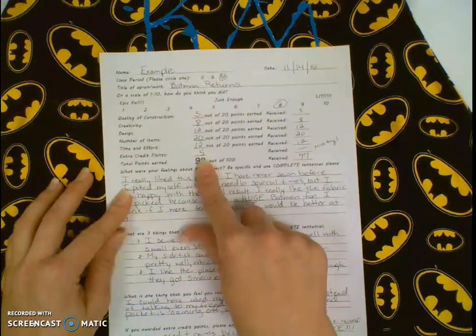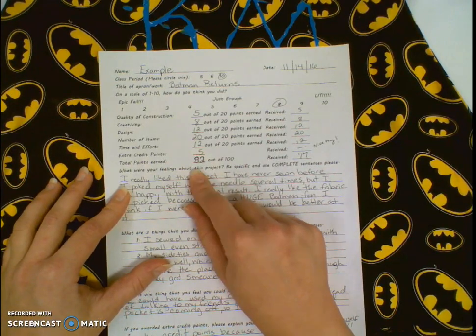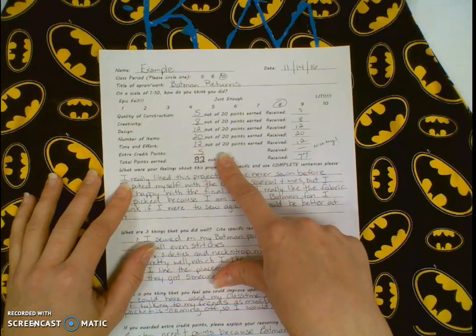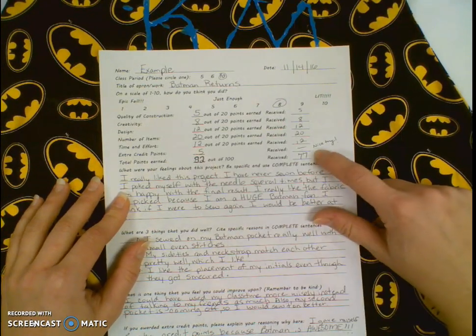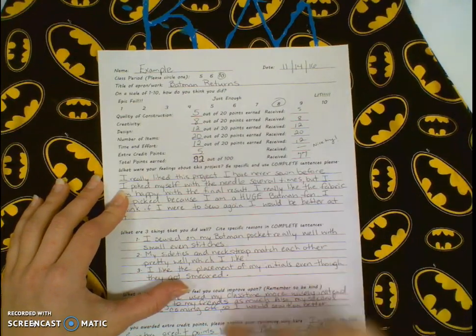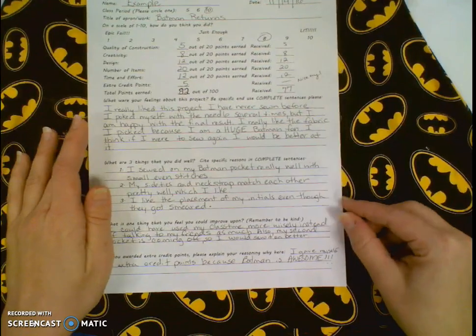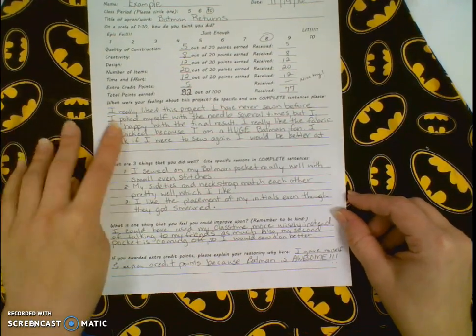Extra credit points - this is subjective as to how you see it. I will agree or disagree with you. Over here you see Miss Gamble has put nice try. They gave themselves five points and there is an area down here where you can explain yourself why you gave yourself that many points.